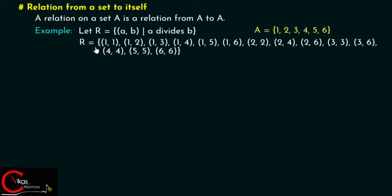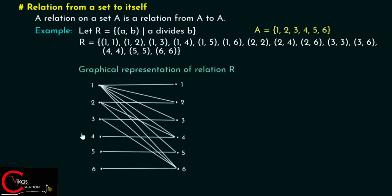This is our relation R, and you can see it is a subset of A cross A. This is the graphical representation of relation R. You can see the mappings: from 1 to 1, 1 to 2, 1 to 3, 1 to 4, 1 to 5, 1 to 6; then 2 to 2, 2 to 4, 2 to 6; then 3 to 3, 3 to 6; then 4 to 4, 5 to 5, and 6 to 6. This is nothing but relation R.